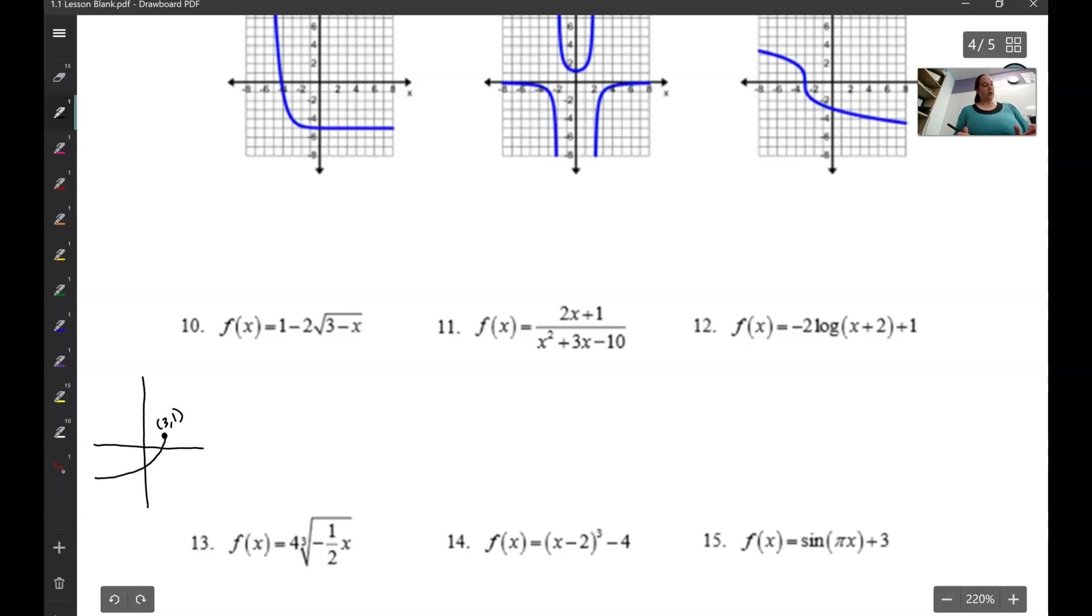And from here, same thing we just did. So our domain for this one is going to be negative infinity. We're going to go up to 3. Because it's a square root graph, it's a point. So we're going to include that, which means we want a bracket on 3. And our range will be negative infinity up to 1. Our y values go from negative infinity up to the y value of 1. So there's that one.